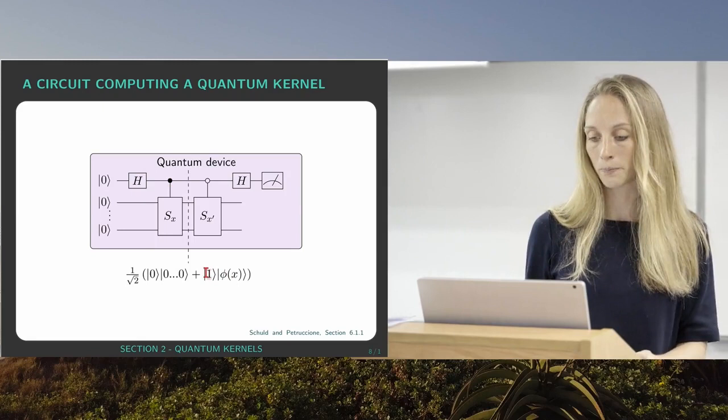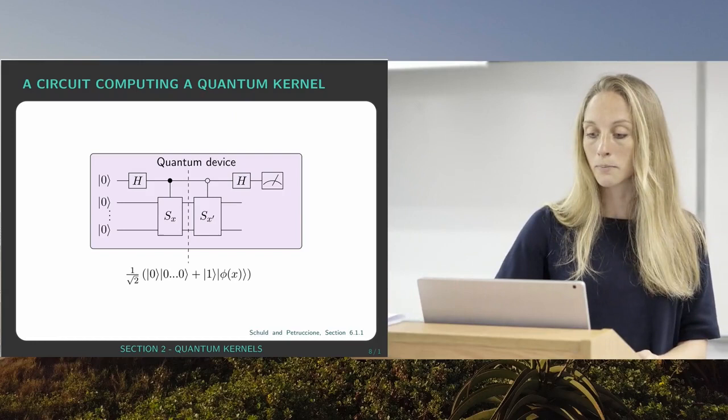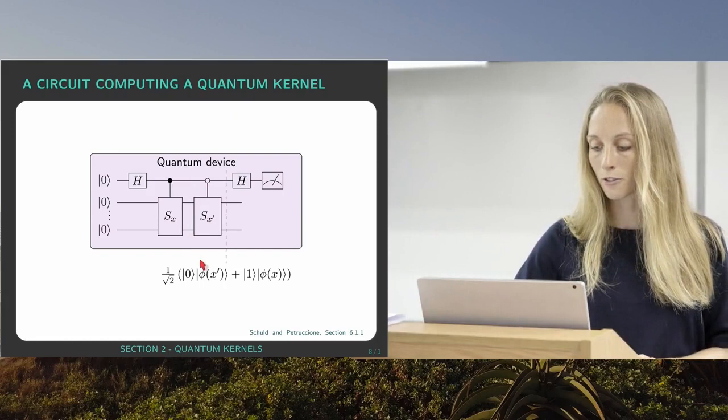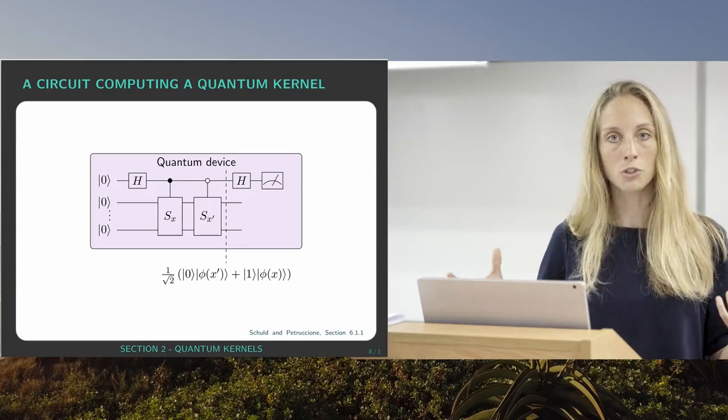Next we do exactly the same thing but now with input x dash or x prime and conditioned on the ancilla being in state 0. So now we have these two feature vectors in one big quantum superposition but in the two different branches of the quantum superposition flagged by the state of the ancilla.